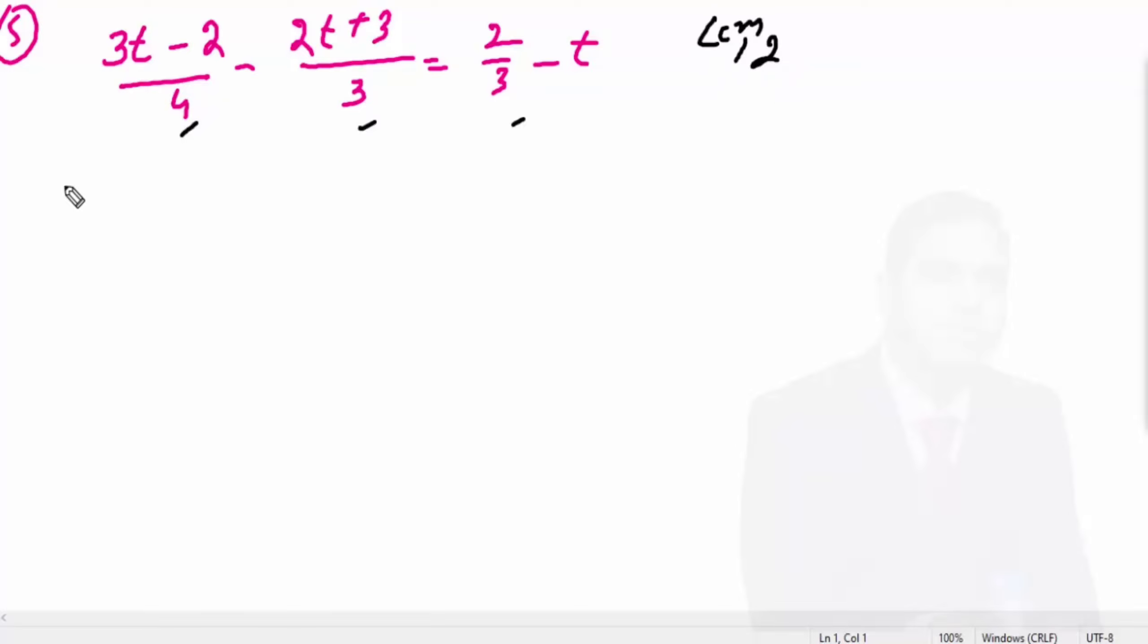So multiply the whole equation with 12. 12 into 3t minus 2 divided by 4 minus 12 into 2t plus 3 over 3, into 12 into 2 by 3 minus 12 into t. I multiplied the entire equation with this.